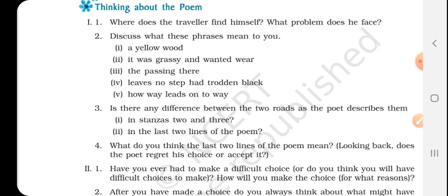The first question of the first part is: where does the traveller find himself? You have to tell the point where the traveller is, where the poet is. The next question is: what problem does he face? When he was at that point, what was there before him, in front of him? This has been referred to as the problem — there is no specific problem, just the thing which is there in front of the traveller where he is standing.